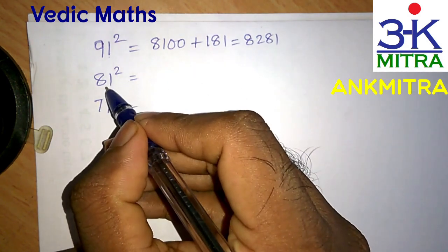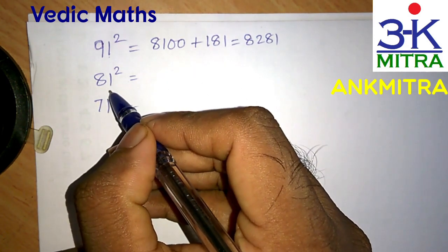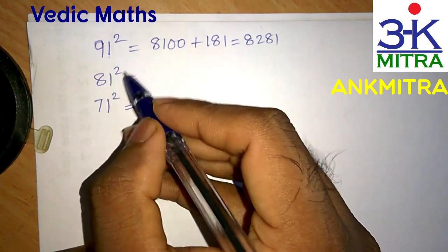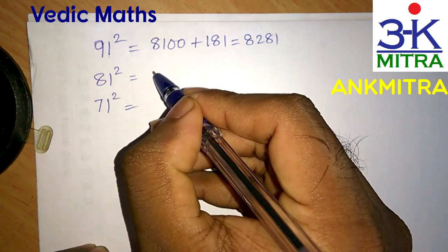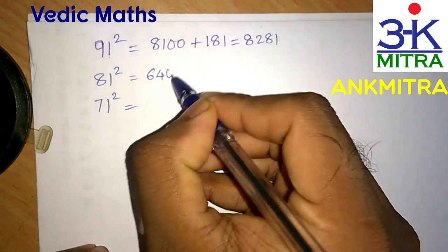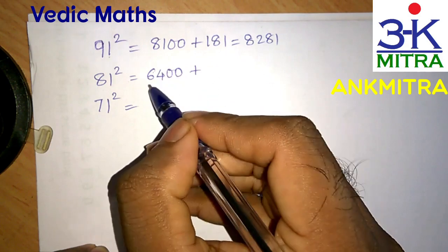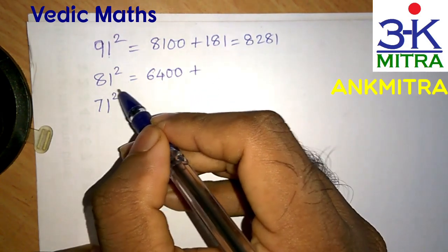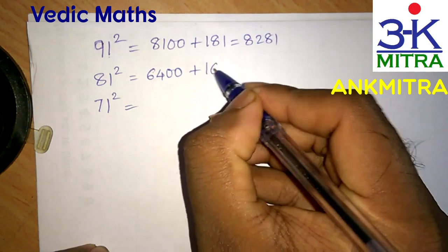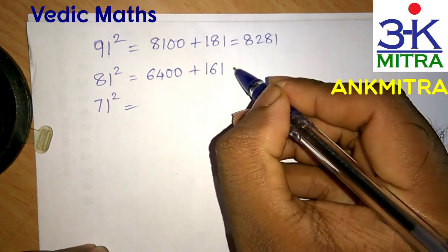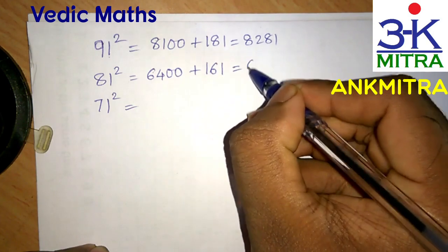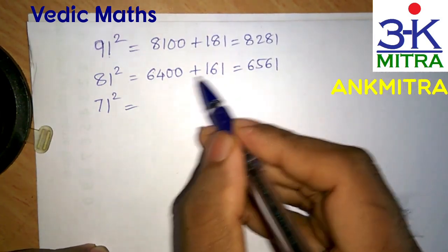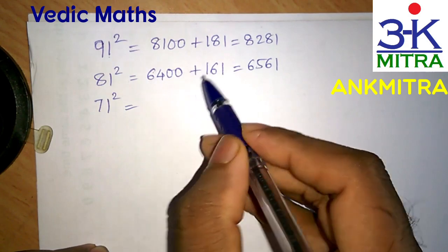Similarly, let's find the square of 81. The number just before 81 is 80, a perfect round number. The square of 80 is 6400, and we add the sum of 80 and 81, which is 161. Hence, the square of 81 is 6561. Very easy—with a little practice, you can do this in just two to four seconds.